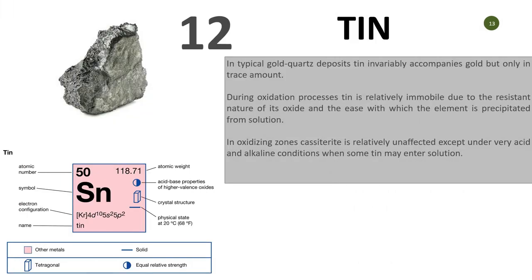Number twelve is tin. In a typical gold ore deposit, tin invariably accompanies gold, but only mostly as a trace element. During the oxidation process, tin is relatively immobile due to its resistant nature. You need to look out for tin as one of the elements when prospecting for gold.